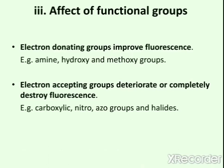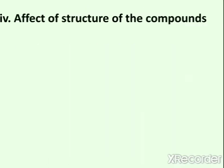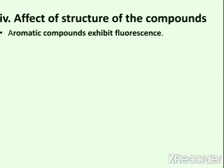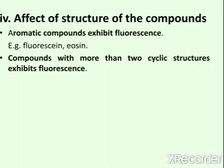The structure of compounds also plays a very important role in fluorescence. Aromatic compounds exhibit fluorescence — for example, fluorescein and eosin have aromatic structures. Compounds with more than two cyclic structures also exhibit fluorescence; examples include vitamin K, nucleosides, and purines.